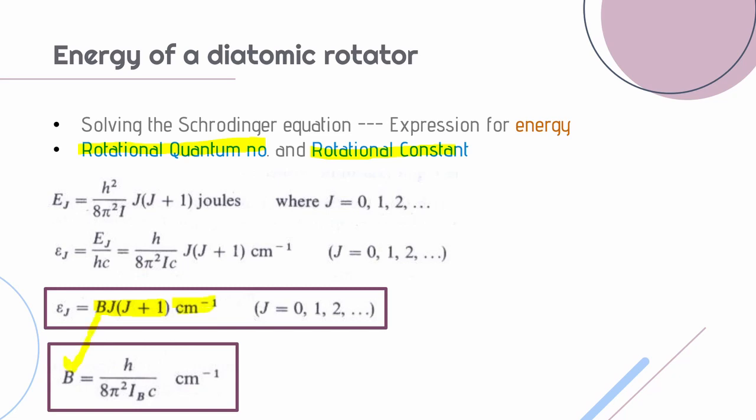The rotational constant is given by H divided by 8π² I times C, where I is the moment of inertia and C is the speed of light and it has the same dimensions as wave number. J is called the rotational quantum number and it can take values like 0, 1, 2, etc.